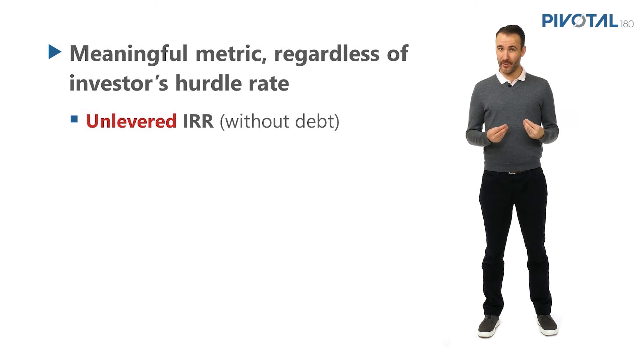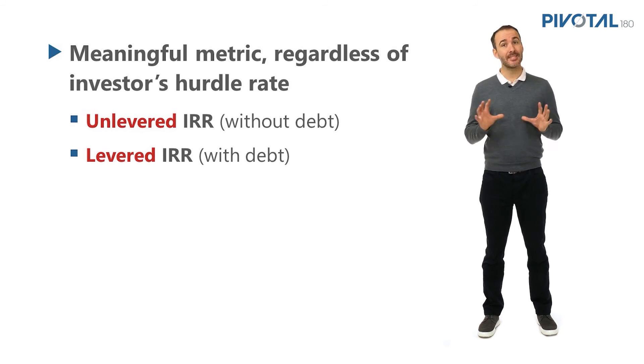We will also refer to a levered IRR, sometimes called a geared IRR, which specifies the returns to the equity investor. And sometimes this is just called an equity IRR. And the levered part is implied because we know that debt must be paid before there are any financial returns to equity.